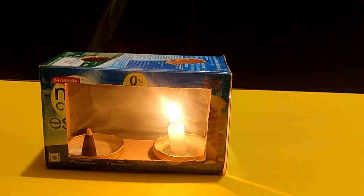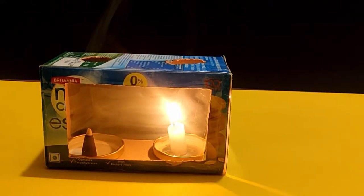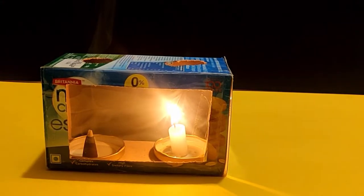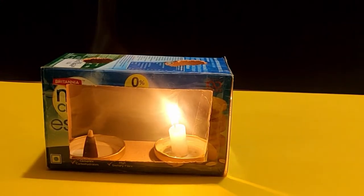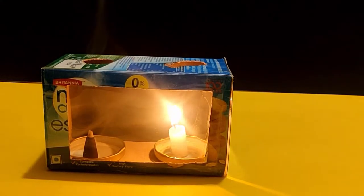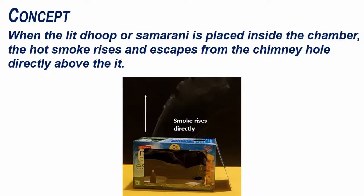You will notice convection currents of smoke from the dhup or samrani moving towards the candle. When the lit dhup or samrani is placed inside the chamber, the hot smoke rises and escapes from the chimney hole directly above it.